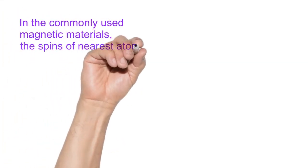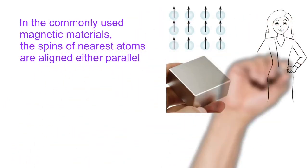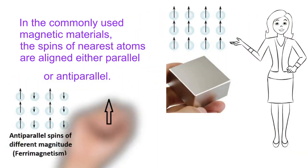In commonly used magnetic materials, the spins of the nearest atoms are aligned either parallel or anti-parallel.